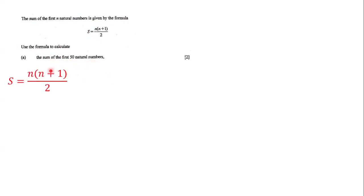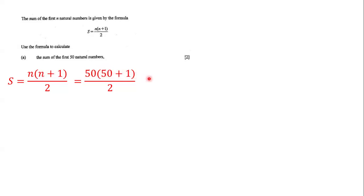Here we have the formula and in this case n is equal to 50, so wherever we see n we're going to put 50. We have 50 here because n is here, and 50 here because n is here. We add 50 plus 1, and 50 plus 1 is 51.